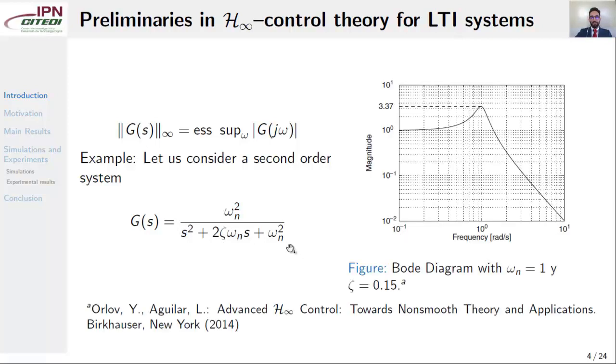A Bode diagram of this transfer function G is given in this figure for omega_n equals 1 radian per second and zeta equals 0.15. In this axis we have the frequency in radians per second and in this axis we have the magnitude of G. If you see here for 1 radian per second, the magnitude of G reached its maximum value, so this value is the H-Infinity norm of G.